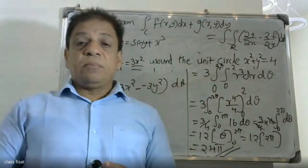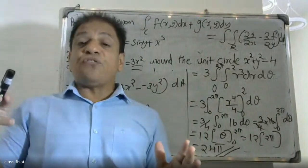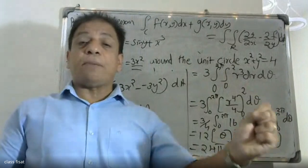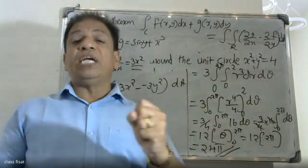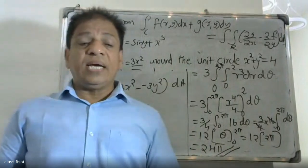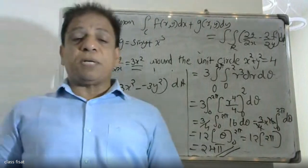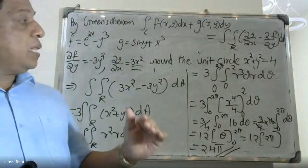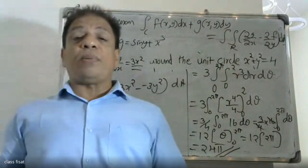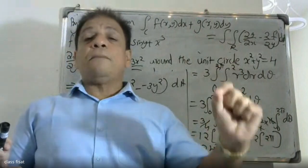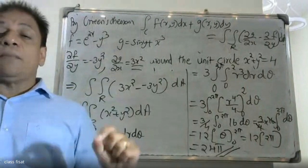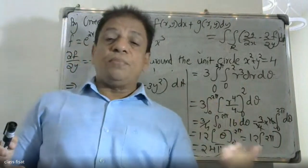To recap: the formula is the integral over C of F dot dr. The vector dr equals dx i plus dy j. Substituting F dot dr gives the integral over C of (2x minus y³) dx plus (sin y plus x³) dy. Applying Green's theorem formula: integral over C of F(x,y) dx plus G(x,y) dy equals double integral R of (∂G/∂x minus ∂F/∂y) dA.